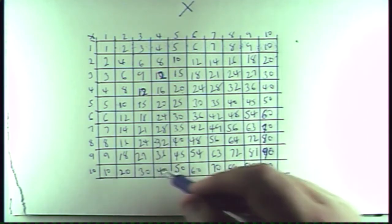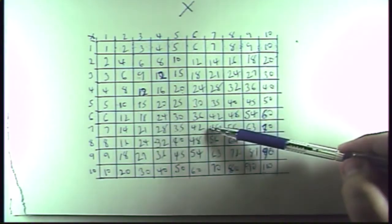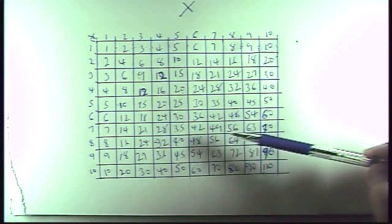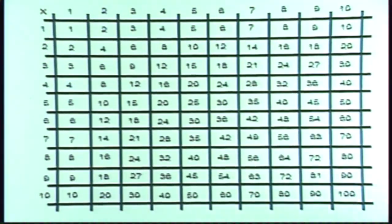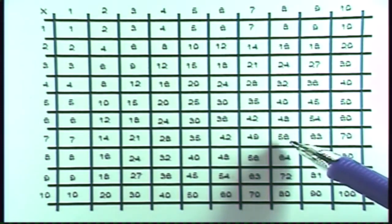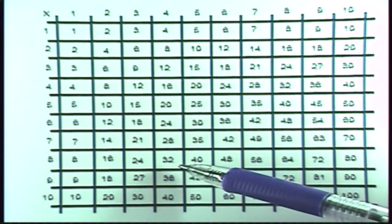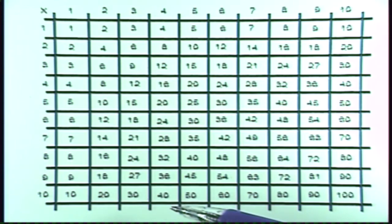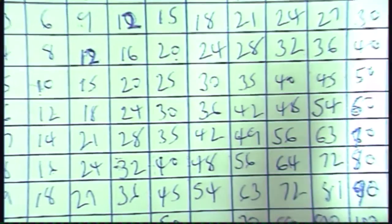Multiplication is adding a number to itself many times over. So if I want to know what six times two is, it's twelve. If I want to know what seven times seven is, forty-nine. Let's look at our clearer chart where you can see it better. If I want to know what ten times ten is, it's a hundred. If I want to know what eight times seven is, it's fifty-six. If I want to know what eight times four is, it's thirty-two. Or four times ten, it's forty. Here's my multiplication grid that I just made, and I made the grid by doing addition.